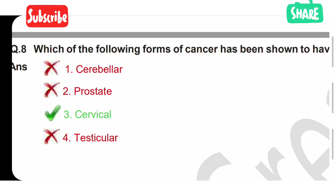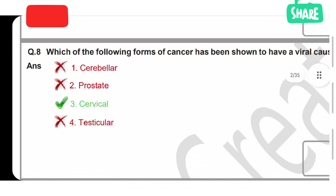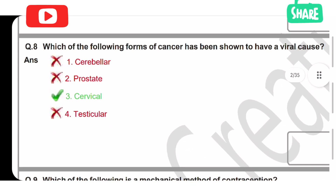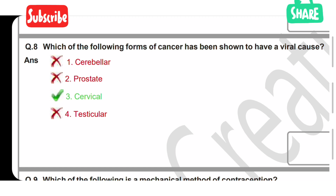Eighth question: which cancer has been shown to have a viral cause? Option 1 is cerebellar, Option 2 is prostate, Option 3 is cervical, and Option 4 is testicular. The correct answer is Option 3 — cervical cancer has been shown to have a viral cause.